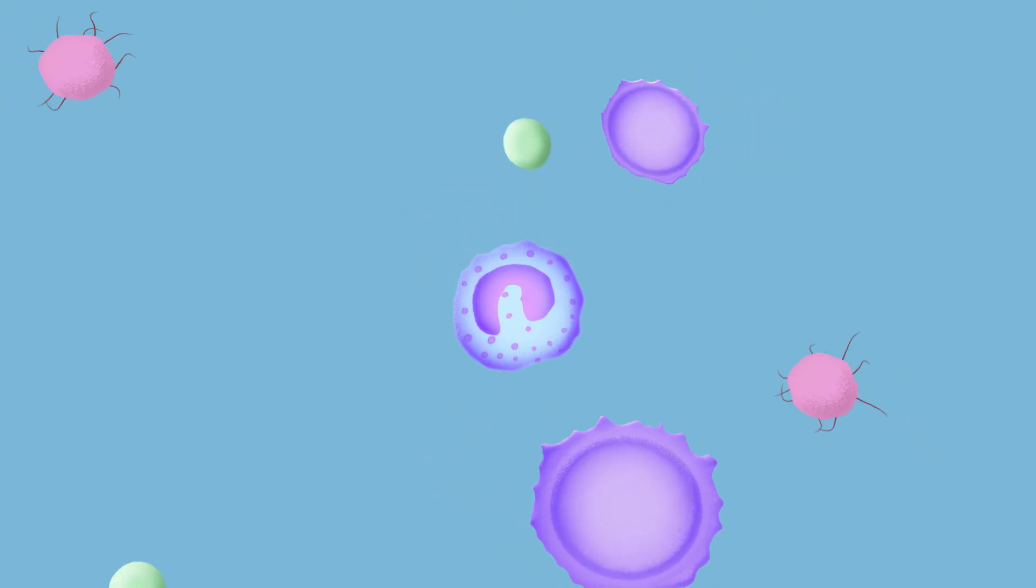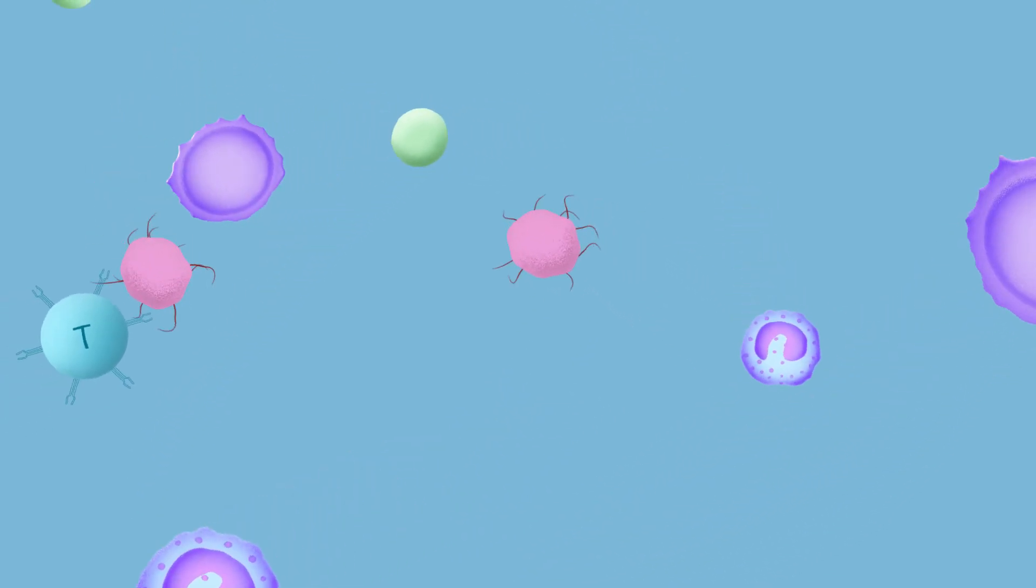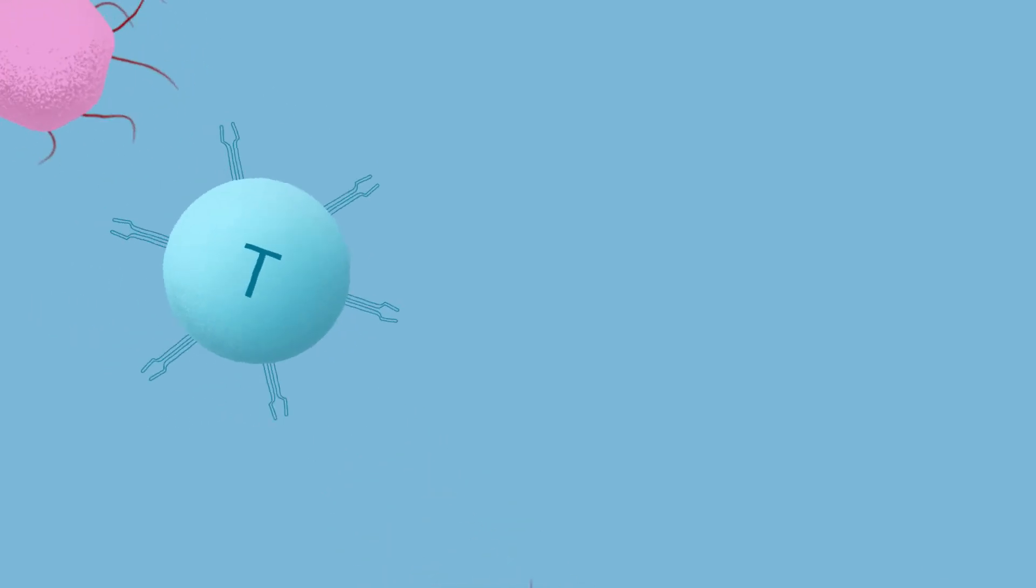Your immune system is made up of different kinds of cells that patrol the bloodstream, seeking out intruders like viruses and abnormal cells like cancer. One of these cells is called a T-cell.